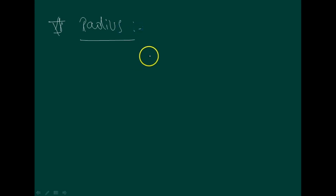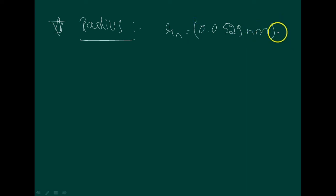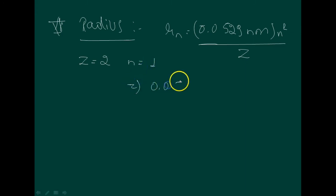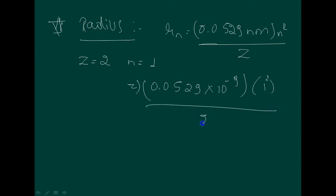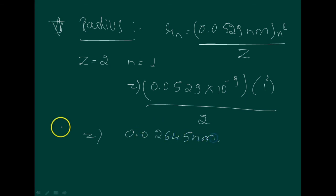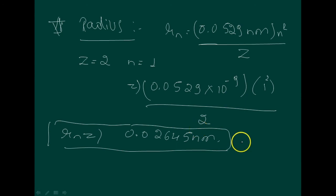Next, the radius of the orbit is given by Rn equals 0.0529 nanometer times n squared divided by z. For helium, z equals 2 and n equals 1. Applying the values: 0.0529 into 1 squared divided by 2 gives 0.02645 nanometers. This is the radius of the first orbit of helium.